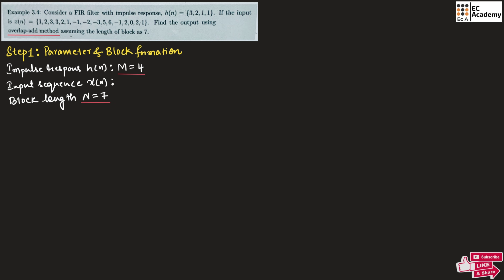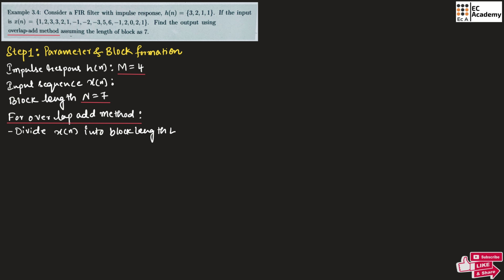Now how do we choose the block size for the overlap-add method? For the overlap-add method we will divide x of n into block length L, and we will use the relation N is equal to L plus M minus 1. Since N is equal to 7, we can write 7 is equal to L plus M (which is 4) minus 1. So from this we can say L is equal to 4.